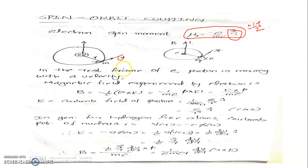We will approach this problem in a different scenario. This electron, having a magnetic moment, is revolving around the nucleus, which has a positive charge. This positive charge ultimately creates an electric field around its own vicinity, and it is in this electric field that the electron is undergoing its orbit around the nucleus along with its simultaneous spin motion.